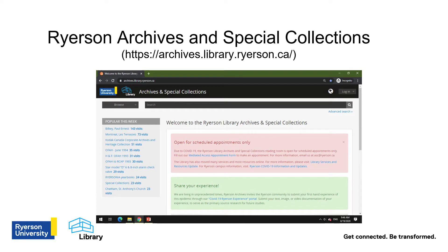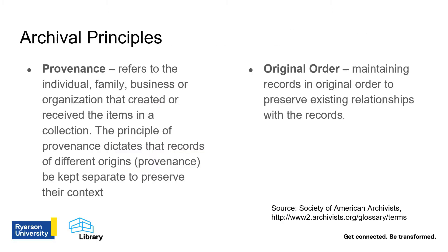Before you start your research, it is important to understand the principles and standards used by Canadian Archives and Special Collections. There are two principles maintained by archives in Canada: provenance and original order. Provenance refers to an individual, family, business, or organization that created or received the items. Records from different origins should be kept separate.